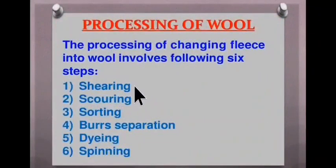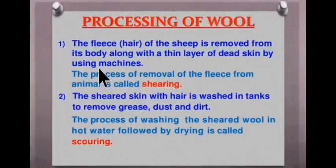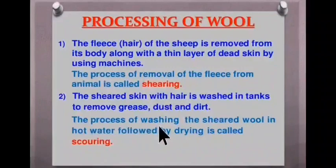There are mainly six steps in the processing of wool: shearing, scouring, sorting, burr separation, dyeing and spinning. The first step is shearing — the fleece of the sheep is removed from its body along with a thin layer of skin using a machine. There are modern shavers by which shearing is done. The process of removal of fleece from the animal is called shearing. The sheared skin with hair is then washed in tanks to remove grease, dust and dirt.